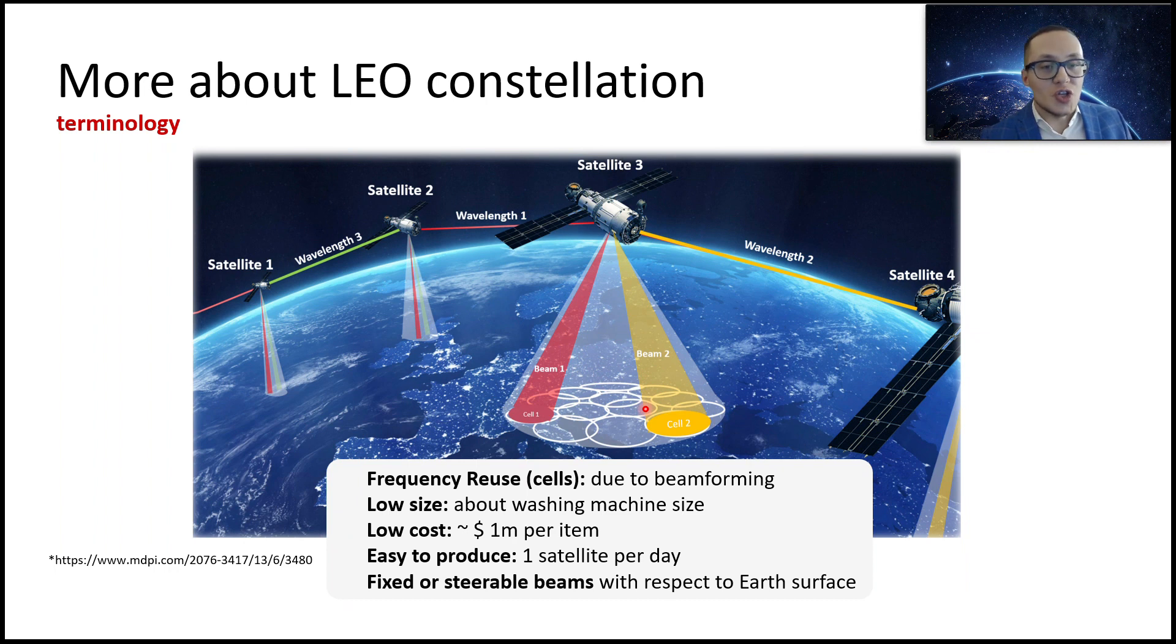This is not like geostationary, just set up receiver and that's all. Because coverage almost stable and doesn't change. With LEO satellites, it is very probable that you need to use some special mechanical tracking systems to point uplink connection to the satellite. And of course, you need thousands of satellites because they have narrow beams if you want to have a large capacity system.